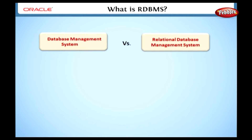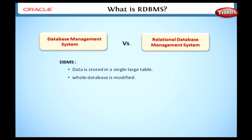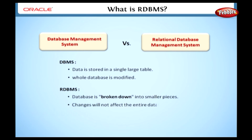Let's see the difference between Database Management System and Relational Database Management System. Nowadays, RDBMS replaces DBMS because in the DBMS model, the data is stored in a single, large table. Therefore, if we modify a record in this model, the whole database is modified. But in the Relational Model, only a small portion of the database is modified because the database is broken down into smaller pieces, so the changes will not affect the entire database.